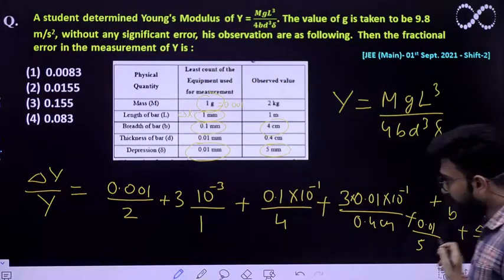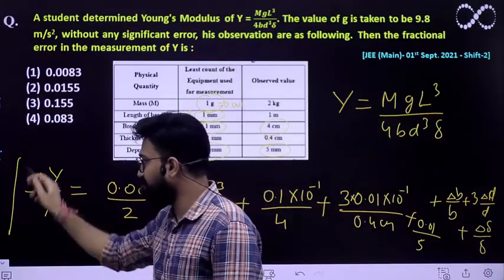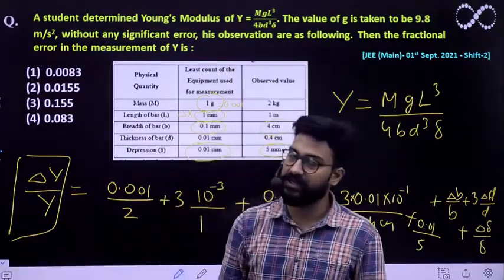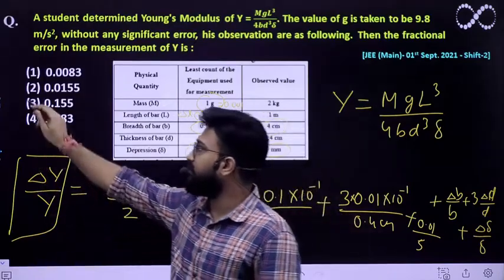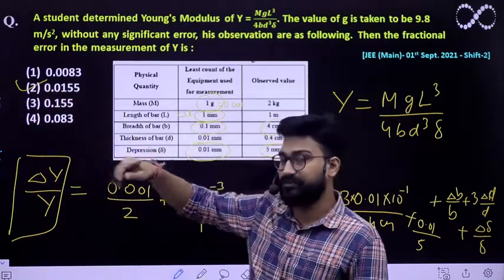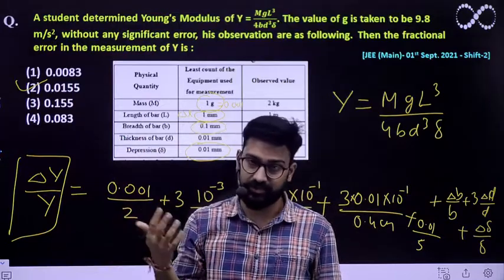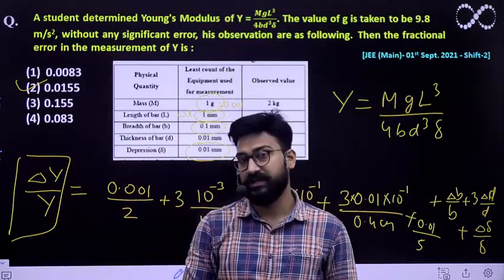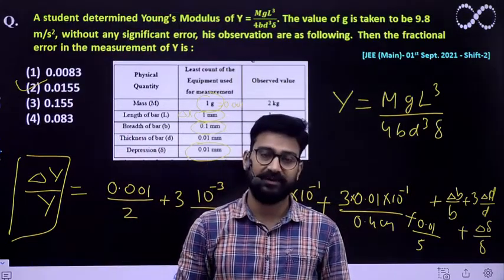Solving this expression, you can get the value of the fractional error in Young's modulus, and it comes out to be 0.0155. So the second option is your correct answer. I hope this question is clear to everyone. Thank you.